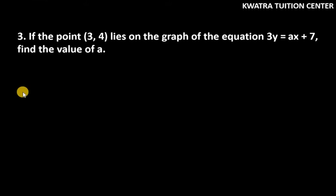Hello everyone, let's start with question number 3. It says if the point (3, 4) lies on the graph of the equation 3y = ax + 7, find the value of a.